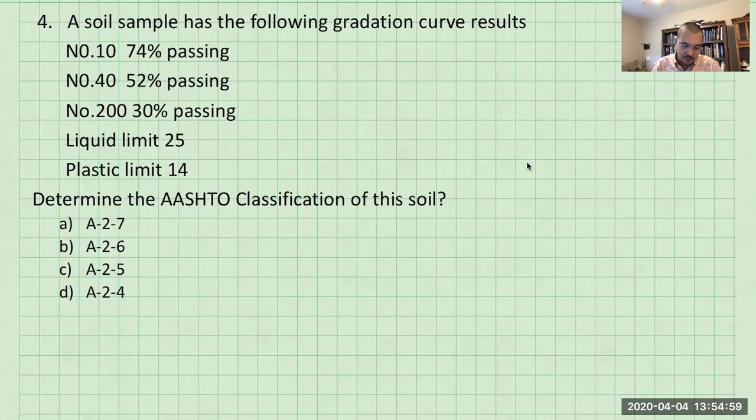The number 10 sieve 74% passing, number 40 sieve 52% passing, number 200 sieve 30% passing, a liquid limit and plastic limit is given. And they're asking for the AASHTO classification of the soil.